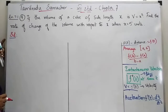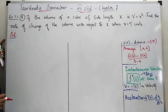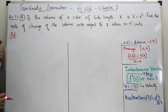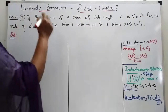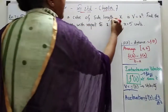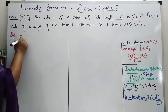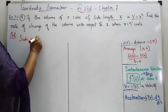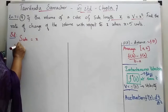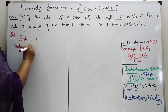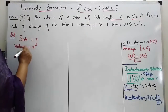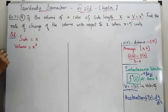Students, it is problem 7.1, the 4th problem. If the volume of a cube of side length x is V equals x cubed — that is, side is equal to x — then volume is equal to x cubed. This is the problem: volume is equal to x cubed.